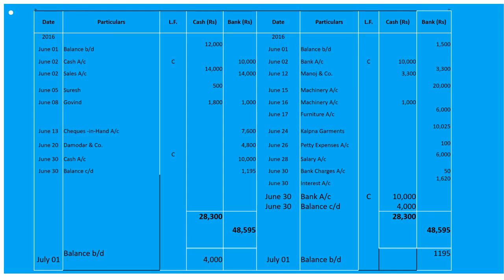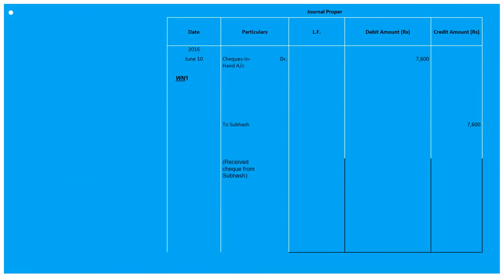Now we record through journal proper under working notes. On June 10th, Cheques-in-Hand Account debited 7,600, 'To Subhash Account' — narration: received cheque from Subhash. This is the entry to be recorded through journal proper.